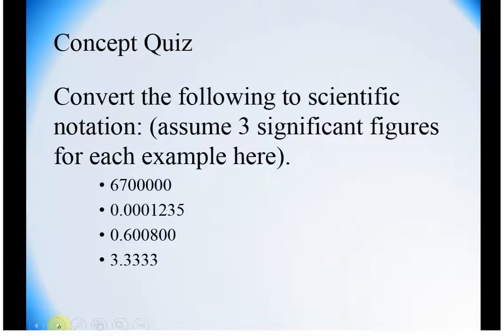Pause and try to convert the following to scientific notation. You should check with your calculator. For me, I know that the decimal that I'm going to assume is here needs to move 1, 2, 3, 4, 5, 6 spaces. So this should be 6.7. If I need 3 significant figures, I'm going to add a 0 times 10. This is a very small number, so it's going to be a negative exponent.